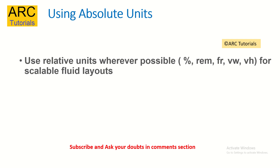Using absolute units is yet another thing I see commonly in the code — people start using pixels. What happens is when you give fixed pixels, it will not scale; it will not be a fluid layout. So start using relative units whenever possible, like percentages or rem, view height or view width, etc. Try not to use fixed pixels because that will not scale on different device layouts, and hence your layouts and your application would be broken on different resolutions. Try and avoid giving fixed pixels — instead, start using relative units.